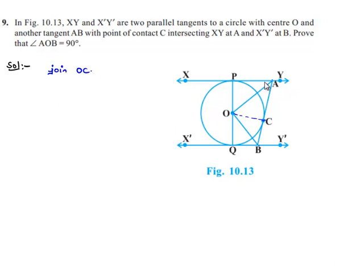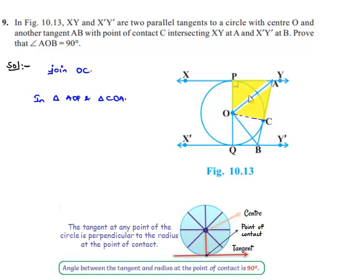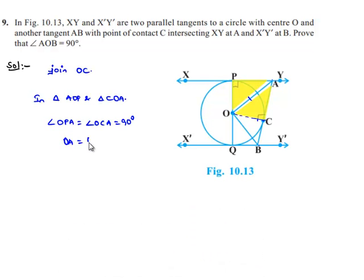Let us consider triangles AOB and COA. In these two triangles, angle OPA equals angle OCA equals 90 degrees, since at the point of contact the tangent and the radius subtend an angle of 90 degrees. OA is the common side in both triangles, and OP equals OC since both are radii of the circle.